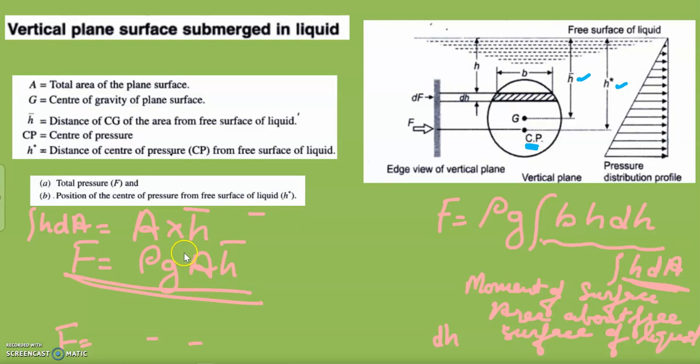This is the total pressure force equation: F = ρgAh-bar. In the next video, we will show how to calculate the center of pressure h-star using the second moment of surface area.